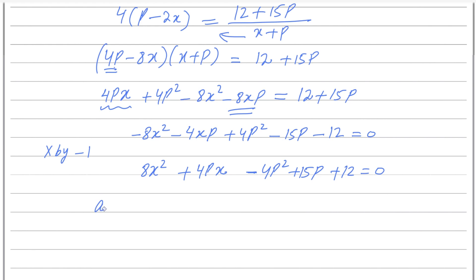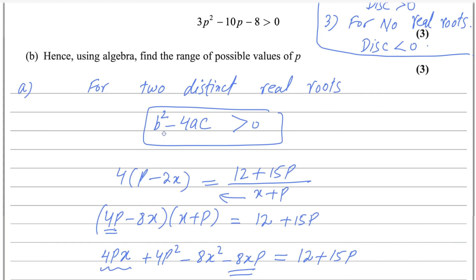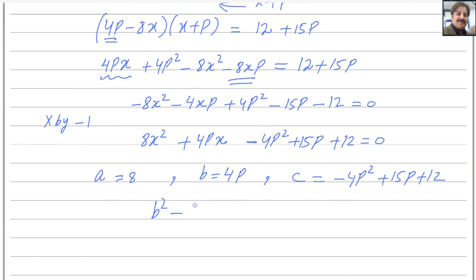Now we have the values: a is 8, b is 4p, and c is minus 4p squared plus 15p plus 12. For distinct roots, we apply b squared minus 4ac greater than 0. Plugging in: b squared is (4p) squared which is 16p squared, and 4 times a gives 32. So we have 16p squared minus 32 times (minus 4p squared plus 15p plus 12) is greater than 0.